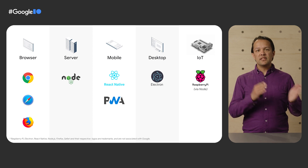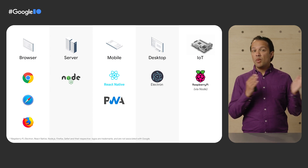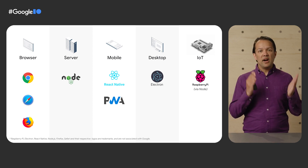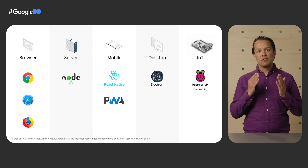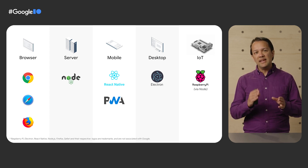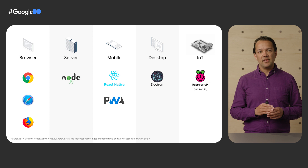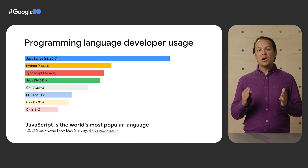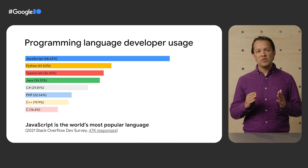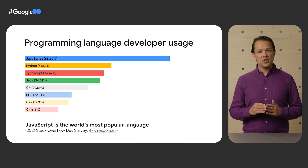From client side to server side, mobile native to desktop native, and even IoT devices like a Raspberry Pi, JavaScript is one of the few languages that can run in all of these locations without any additional dependencies. And currently, over 68% of professional developers use JavaScript in production.